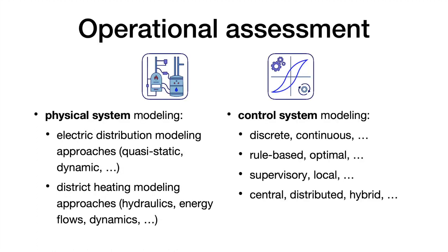We distinguish between the physical system model and the control system model. The physical system model represents the networks as-is: electric lines, transformer, district heating substations, pipes, etc. The control system decides when to turn off a heat pump or charge/discharge a battery. There are numerous approaches to model electric distribution networks, district heating networks, and control systems — including rule-based, MPC, or supervisory control.